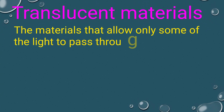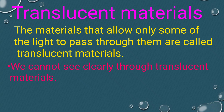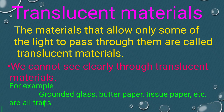Translucent materials are materials that allow only some of the light to pass through them. We cannot see clearly through translucent materials. For example, ground glass, butter paper, and tissue paper are all translucent materials.